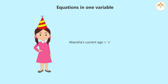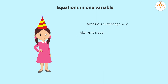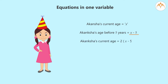Akanksha's age five years ago would be five less than today's age, so it would be X minus 5. Akanksha's present age would be double of X minus 5, that is her present age would be 2 times X minus 5.